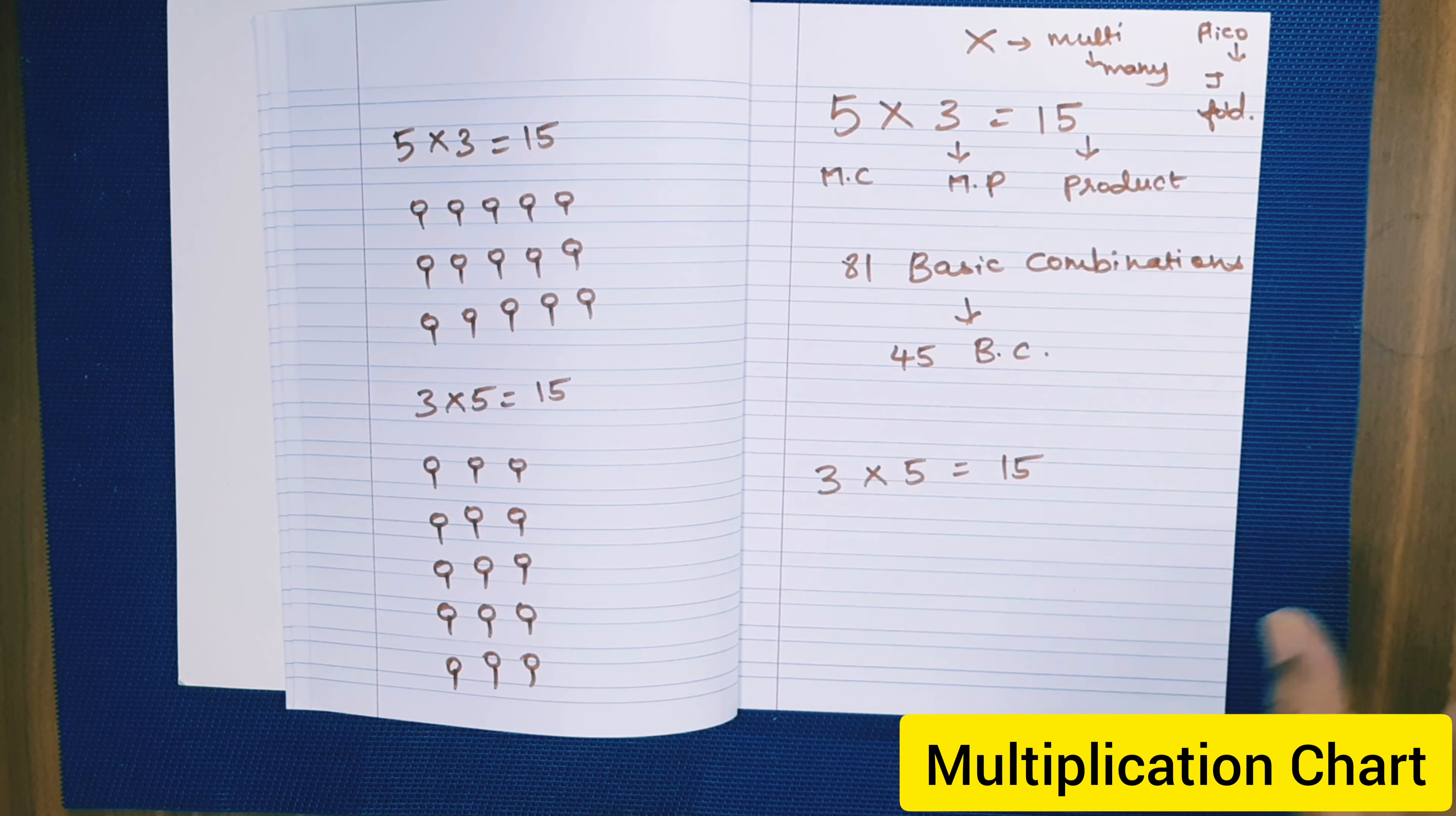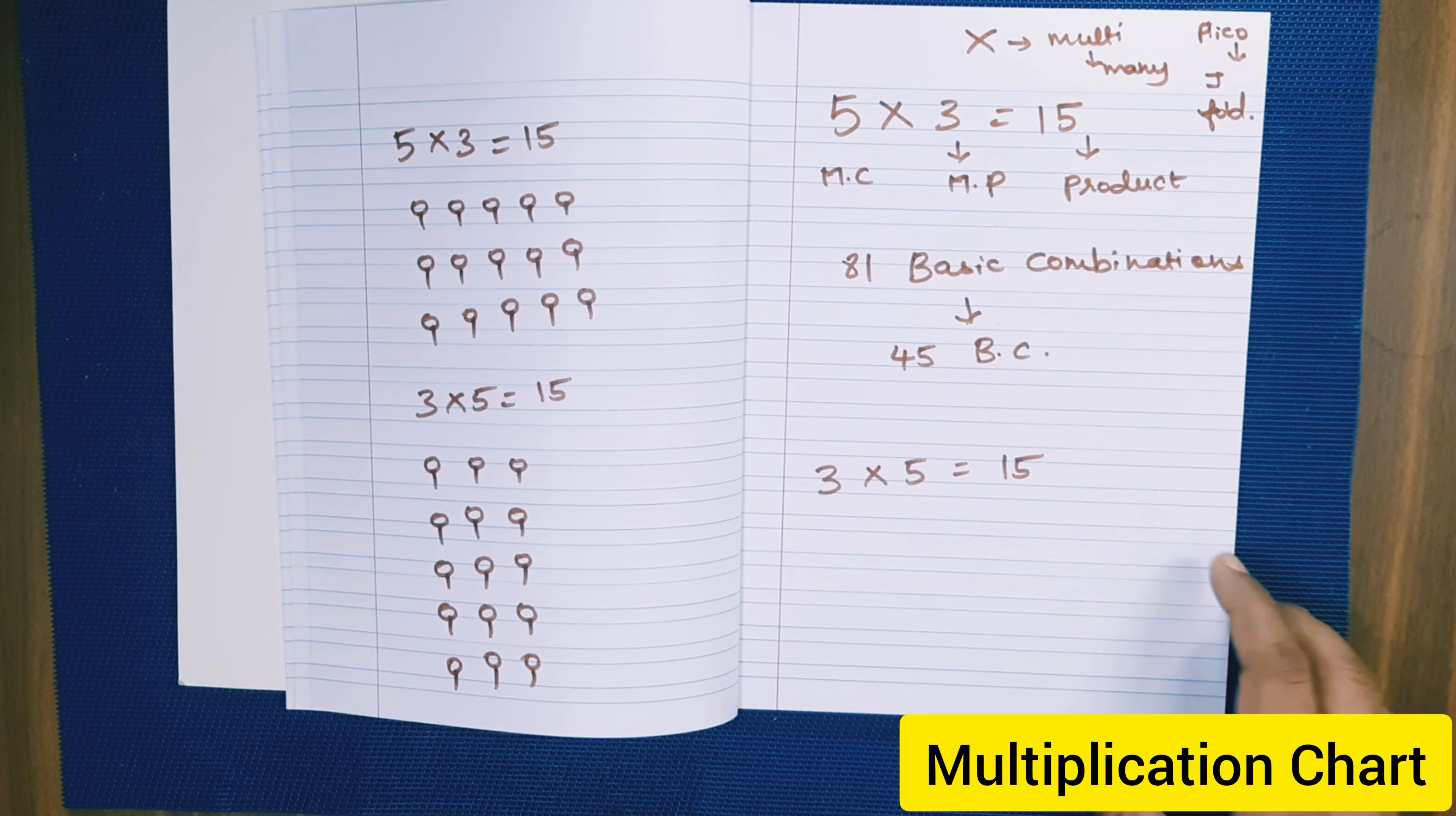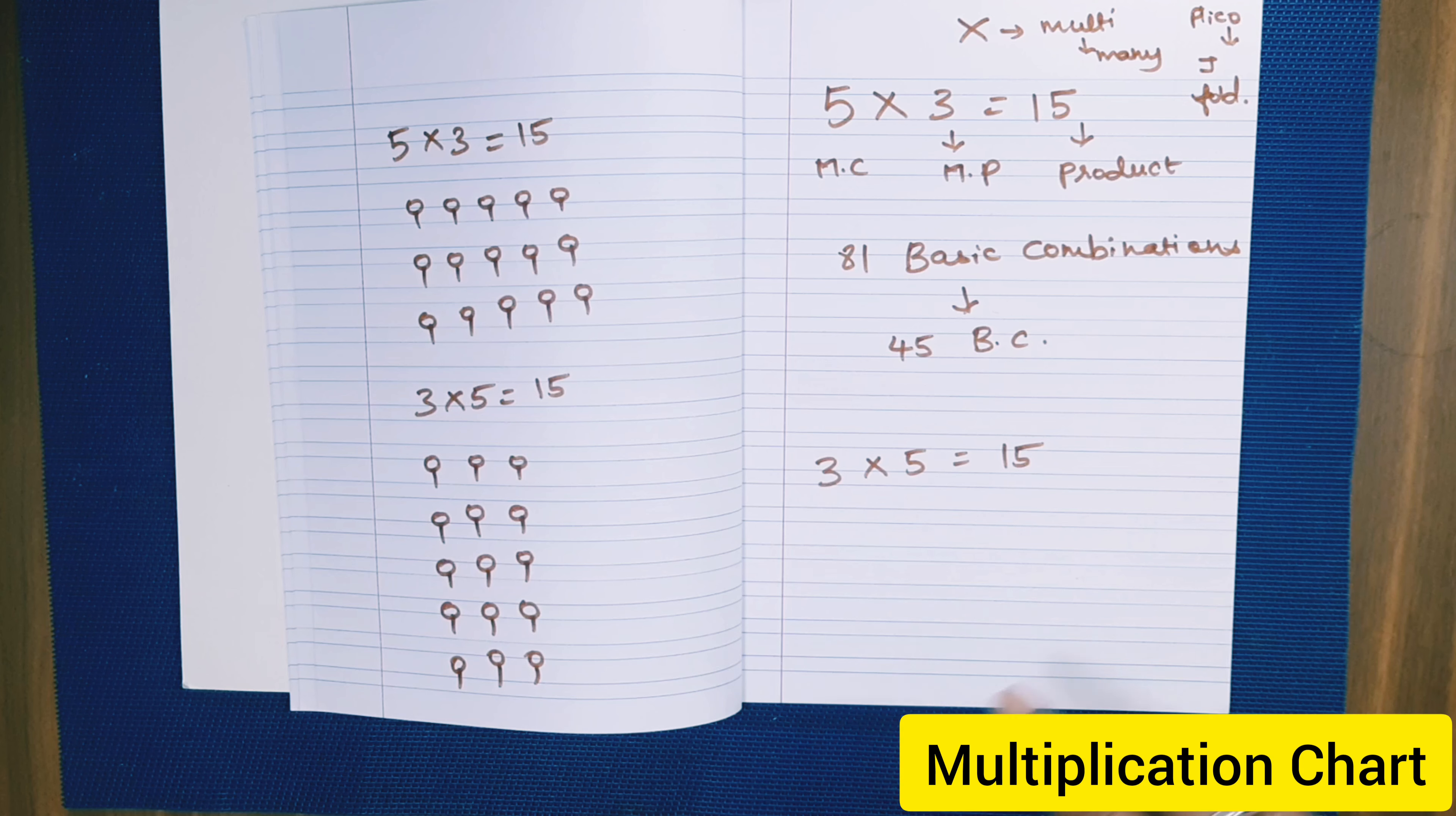Just draw a table based on the number of columns and rows and you can write the basic combinations and results. It's very simple. Before going to that, let's inform the child about everything right from the etymology of the word multiplication. To make the child understand what is multiplication, I have given another video which you can refer in our channel.